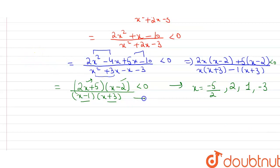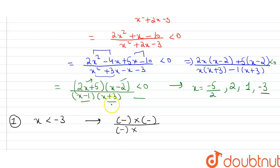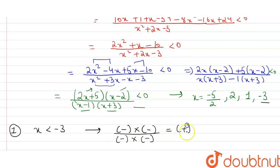The inequality must be less than 0, so we check the sign in each interval. For the first case, x < −3: substituting x = −4, the term (2x + 5) is negative, (x − 2) is negative, giving positive in the numerator. In the denominator (x − 1) is negative and (x + 3) is negative, giving positive. So the overall expression is positive — this case does not satisfy the inequality.